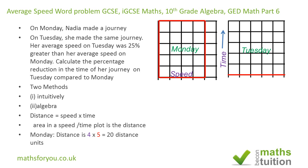On Tuesday, the speed has increased by 25%, so instead of four speed units I now have five speed units — going from four to five represents a 25% increase. It doesn't matter what numbers you use as long as Tuesday's speed is 25% more than Monday's.